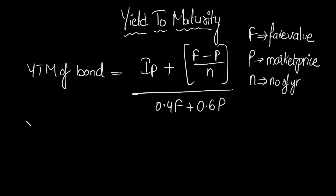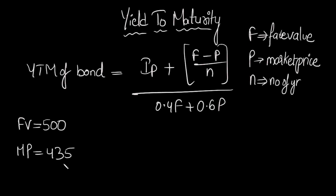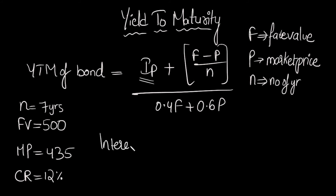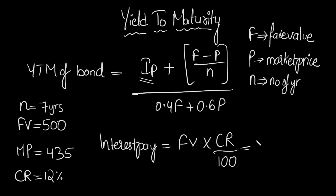Let's take a quick example. Face value of the bond is 500 rupees, market price is 435, coupon rate is 12%, and the number of years to maturity is 7 years. First I need the interest payment: FV × coupon rate / 100 = 500 × 12/100 = 500 × 0.12 = 60 rupees. So the interest payment is 60 rupees.